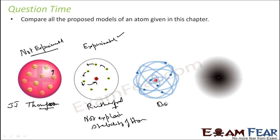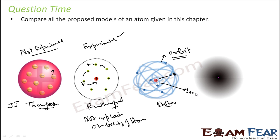Then Bohr gave this structure where he gave postulates. He told that the atom consists of a small, heavily positively charged nucleus in the center, and the electron revolves around it in a circular path — this path is called an orbit. He told that for a given atom, these orbits have fixed radius and energy, and these have different shells: K, then L, then M, and so on. The energy of these shells increases as we go away from the nucleus, so the innermost shell has less energy and the outer shells have more energy.